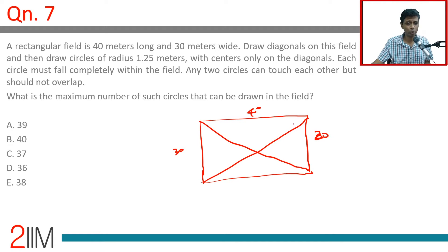1.25 meters is nice and small, we are drawing circles like this. Each circle must fall completely within the field. Only two circles, any two circles can touch each other but should not overlap. What is the maximum number of such circles that can be drawn in the field?